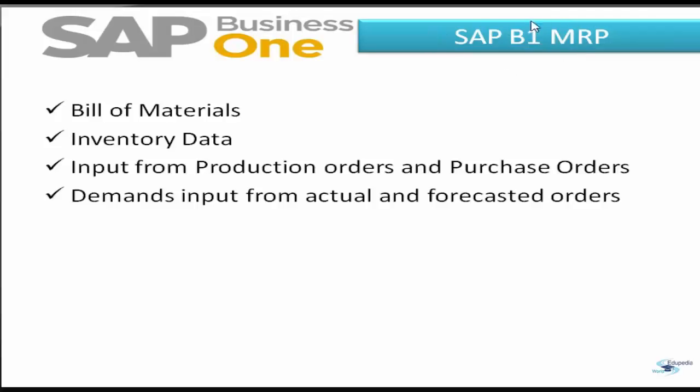Let us understand MRP within SAP Business One. We assume our company uses material requirement planning to plan the items that we manufacture or purchase, in order to maintain the required inventory levels or fulfill customer requirements. Material requirements planning is, in the most generic sense, a set of planning techniques that uses bill of materials data, inventory data, and supply inputs from scheduled production and purchase orders, as well as demand inputs from actual orders and forecasted orders, to calculate the material requirements. After MRP runs, the system gives recommendations for production orders or purchase orders to be fulfilled.